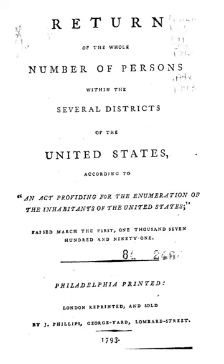No microdata from the 1790 Population Census is available, but aggregate data for small areas and their compatible cartographic boundary files can be downloaded from the National Historical Geographic Information System.